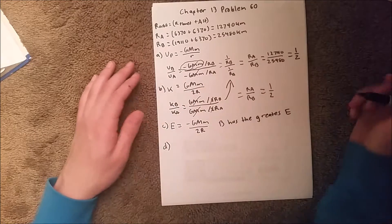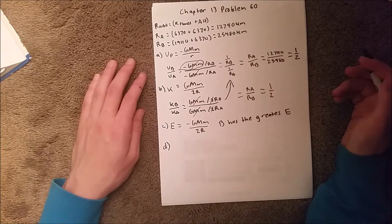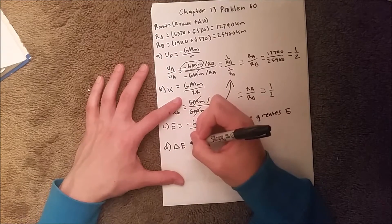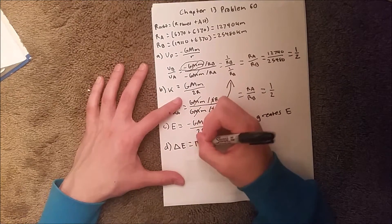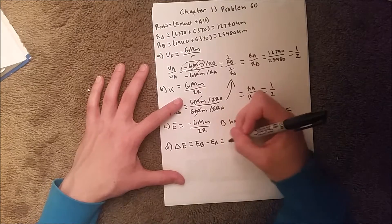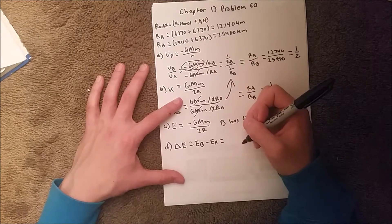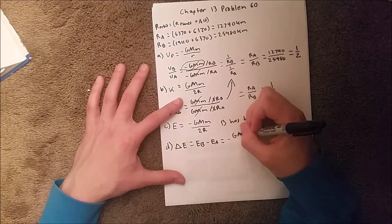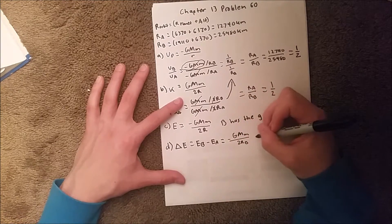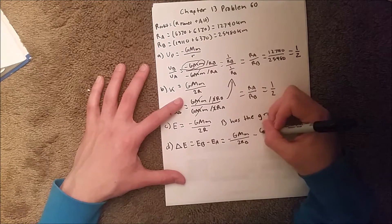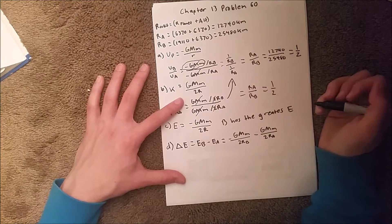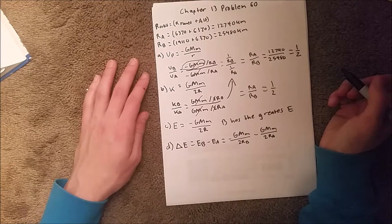So part D asks us what this difference will be. So we know that delta, the change in energy is equal to energy of B minus the energy of A. And this is going to be equal to negative G, big M, little M, over 2RB, minus same thing, just over 2RA.